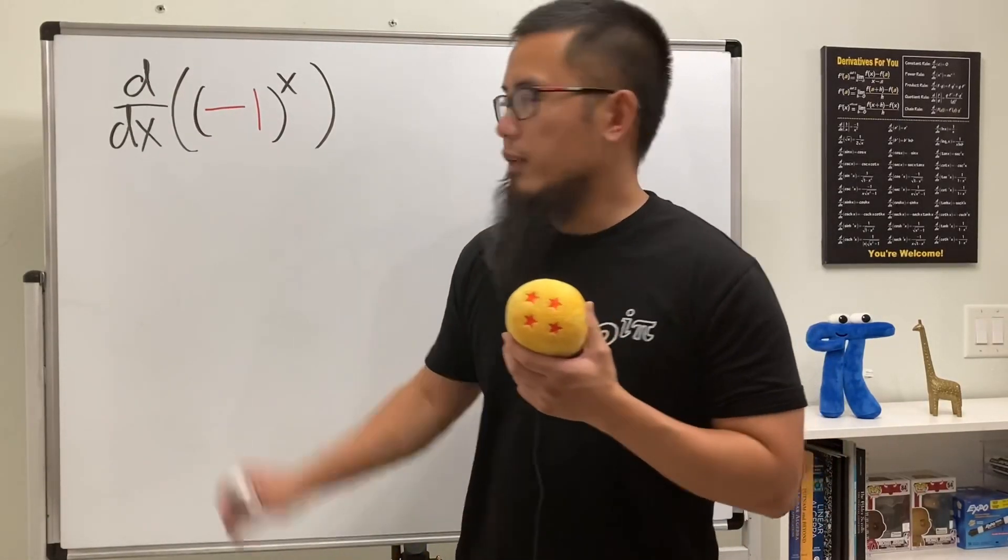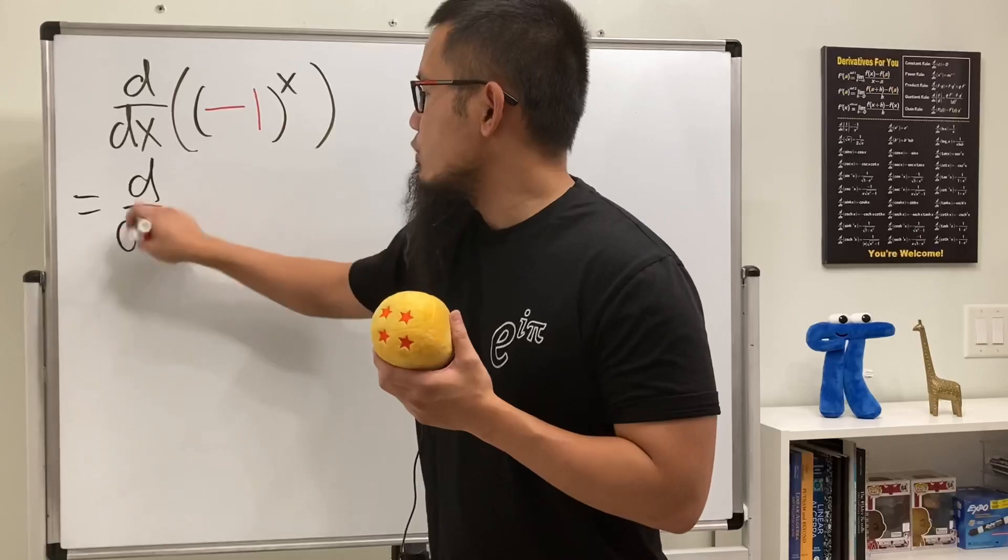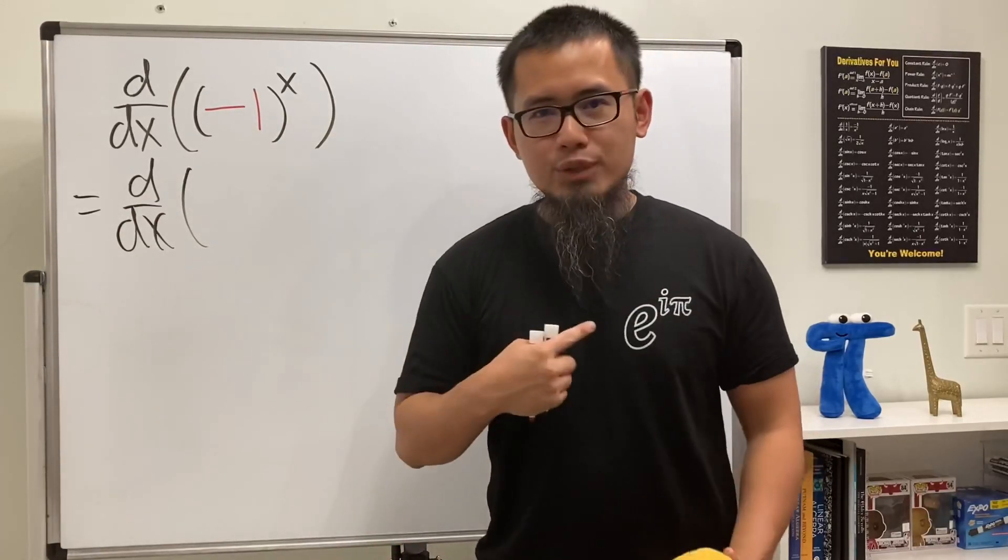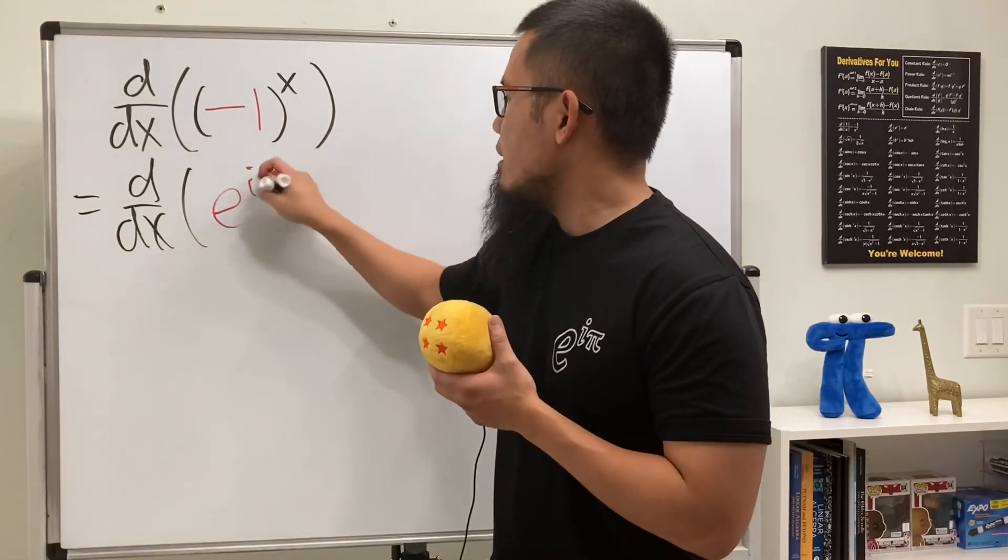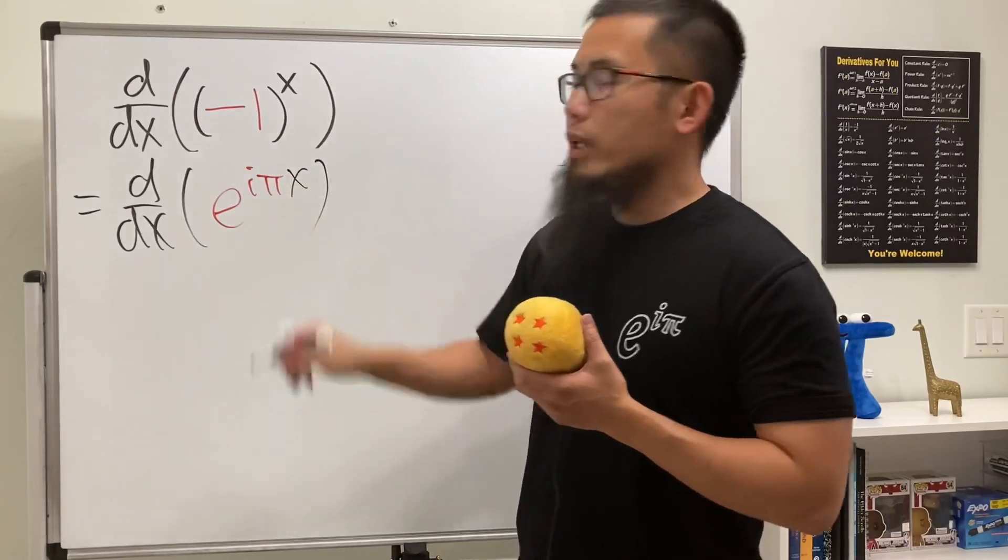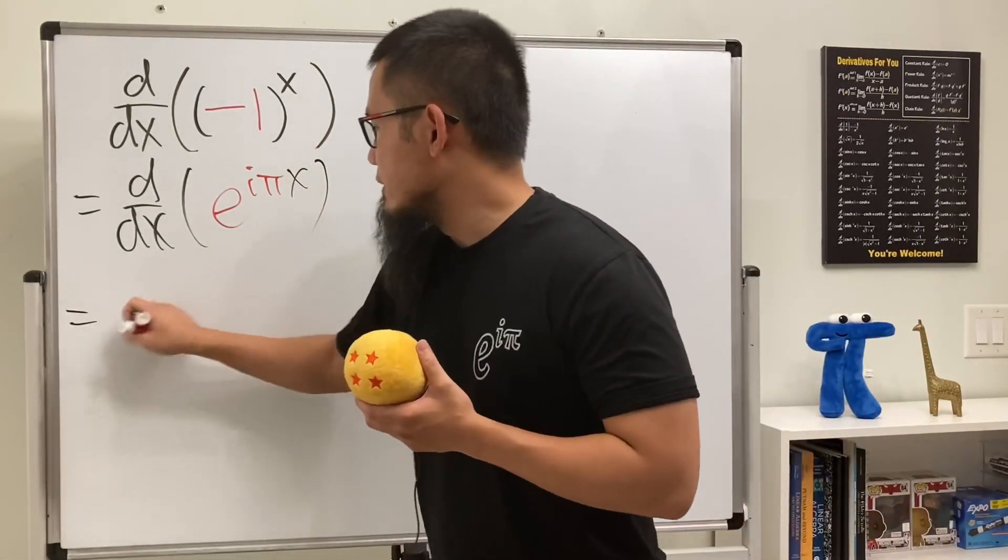So to differentiate this, of course we do the following. First we write d/dx again, and then next we look at negative 1 as what? Yes, e to the iπ. So we're going to put that down right here, and then of course multiply by x. And now we are ready. Differentiating this, we first get e to the